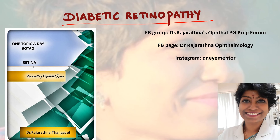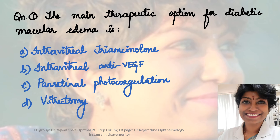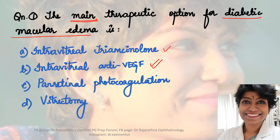We'll proceed right away to discussing the various questions. Question number one talks about the main therapeutic option for diabetic macular edema. The options given are: intravitreal triamcinolone - yes, it is used for DME. But let's look at the other options as well. Intravitreal anti-VEGF - yes. The treatment paradigm has changed to such an extent that the first option we normally resort to nowadays is intravitreal anti-VEGF.